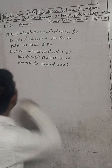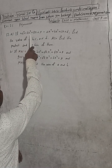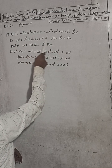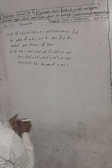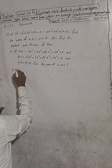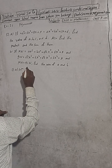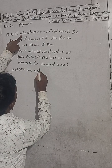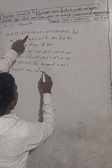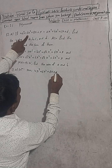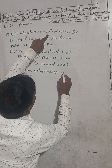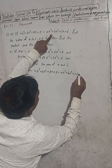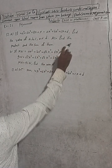Now the question is here: 12a. If 4x³ + 6x² + 8x + 9 is equal to ax³ + bx² + cx + d, find the value of a, b, c, and d. Also find the product and the sum of them. So 12a solution — given: 4x³ + 6x² + 8x + 9 = ax³ + bx² + cx + d.